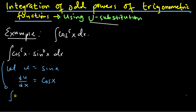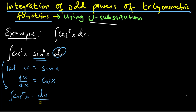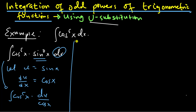So now I have the integral of cos to power 5x. I won't write the sin⁰x because it's actually a 1. But for dx, I will write du divided by cos x. So continuing with this, I have the integral of cos to power 4x du.